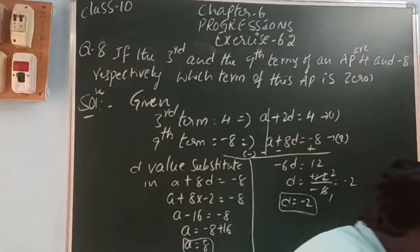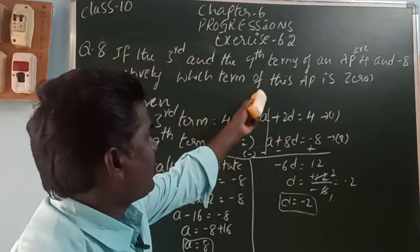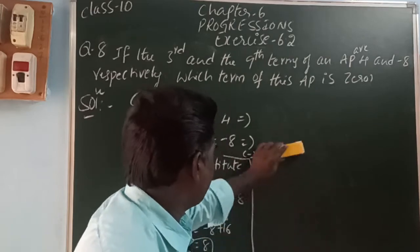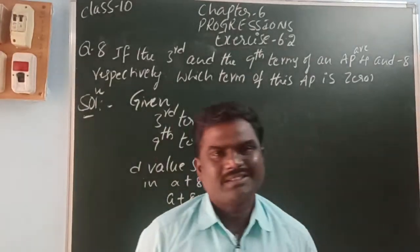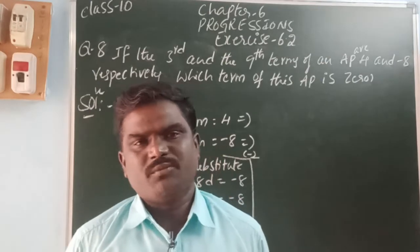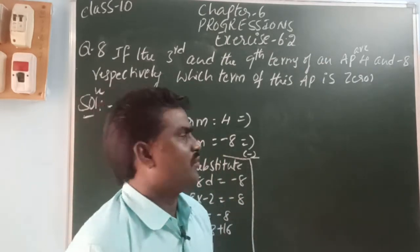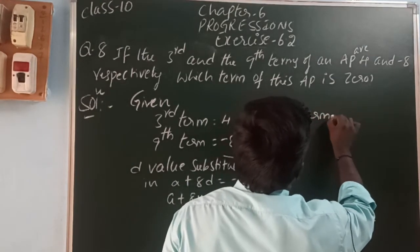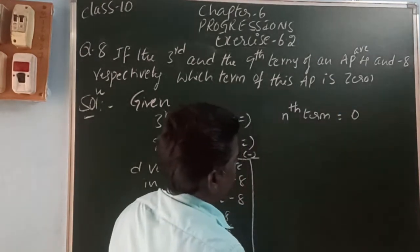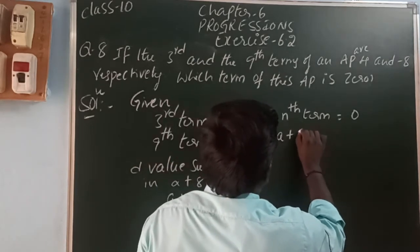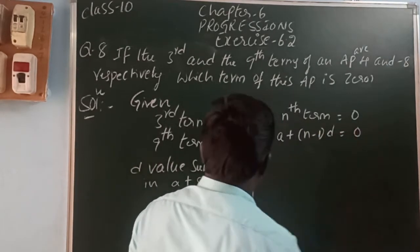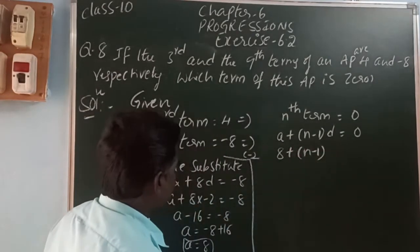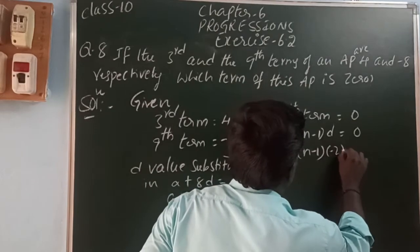So, here, what are they asking? Which term of the AP is 0? For which term, nth term, how many terms, or last term — for all, we can use the nth term of AP. So, here, the nth term: which term we do not know, so let nth term equal to 0. So, A plus (n minus 1) into D is equal to 0. So, A is 8, plus (n minus 1) into D is minus 2, is equal to 0.